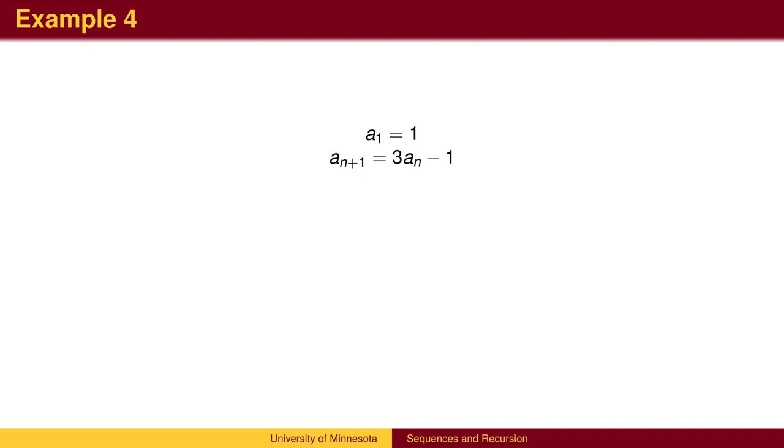Here's another example of a recursively defined sequence. The first element is 1. To get the next element, we multiply the previous element by 3, then subtract 1. The second element is 3 times 1 minus 1, which equals 2.